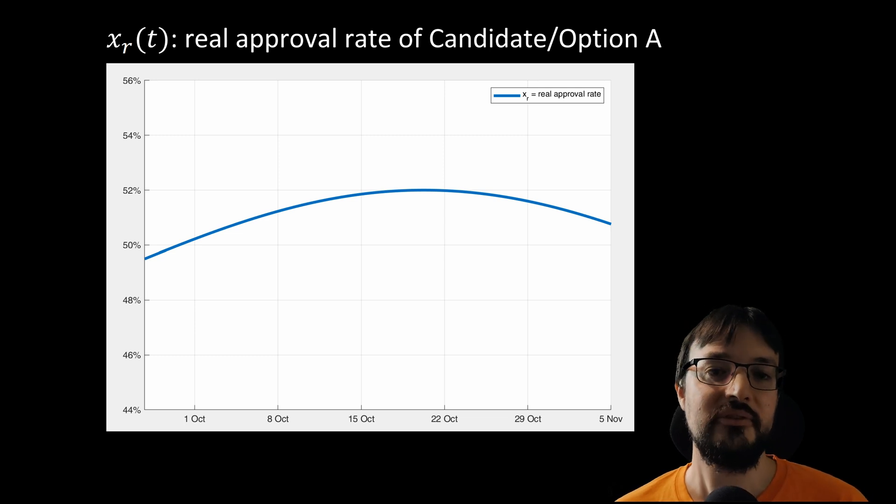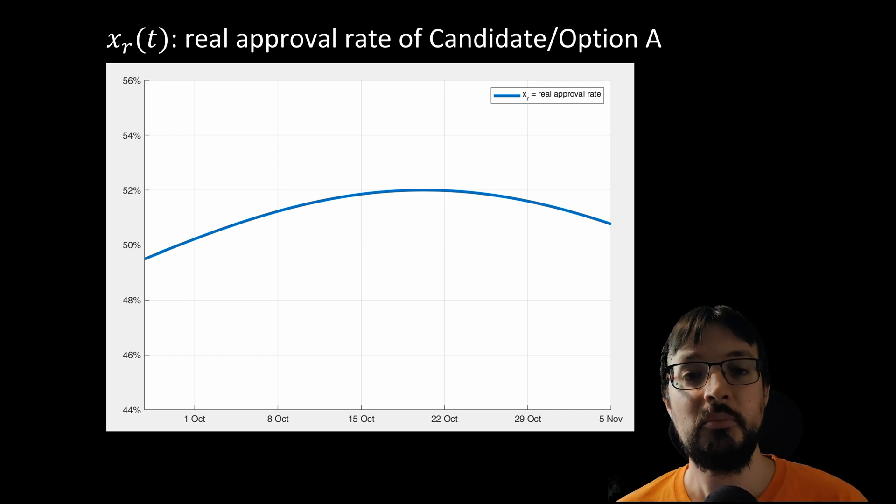The last point in the graph on the right hand side is the election day when the real approval rate is finally measured. Now please keep in mind that this curve that you see here is actually unknown. It exists but is unknown unless we hold a full election every day. The problem pollsters are trying to solve is to find out this real approval rate at some point before the election.